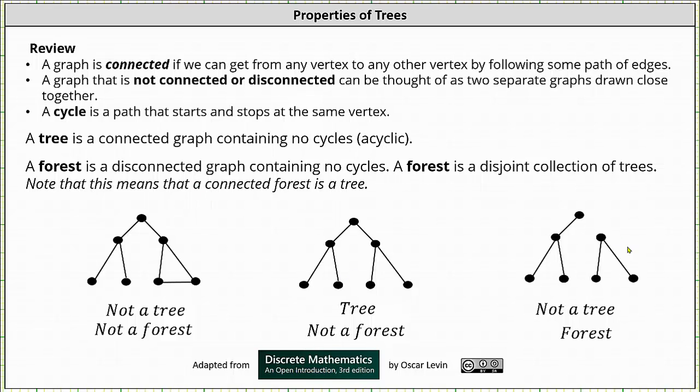And then finally on the right, notice how we have a disjoint collection of trees or a disconnected graph with no cycles. So it's not a tree because it's not connected but it is a forest because it's disconnected and has no cycles.